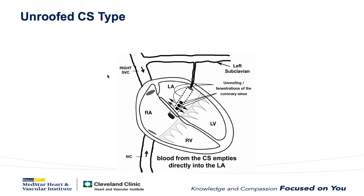Another variant on this is the unroofed coronary sinus. In this situation, the blood return can enter the left atrium directly — the CS is unroofed, and thus there is access from the CS directly into the left atrium. So the size of the vein of Marshall is going to be smaller, because a lot of the blood flow can actually go into the left atrium and doesn't need to go up the vein of Marshall.